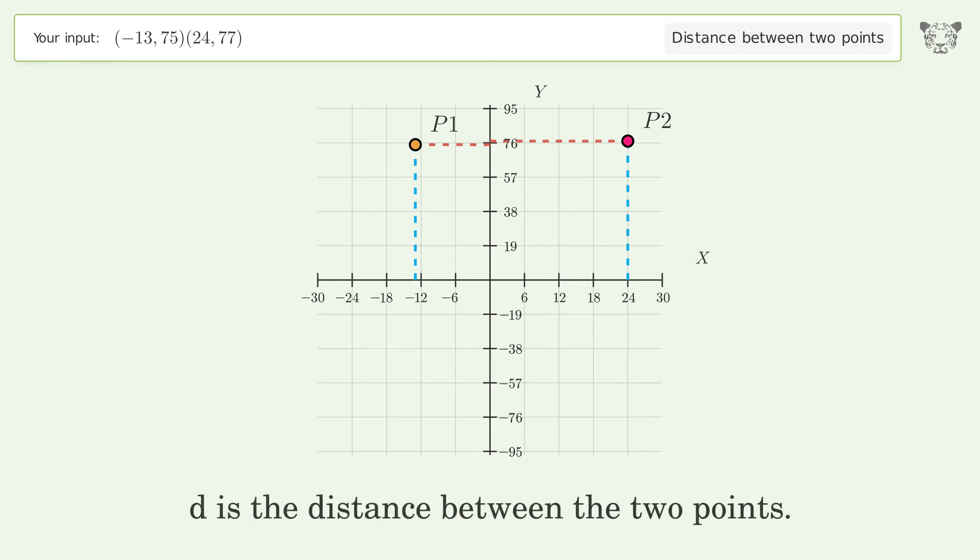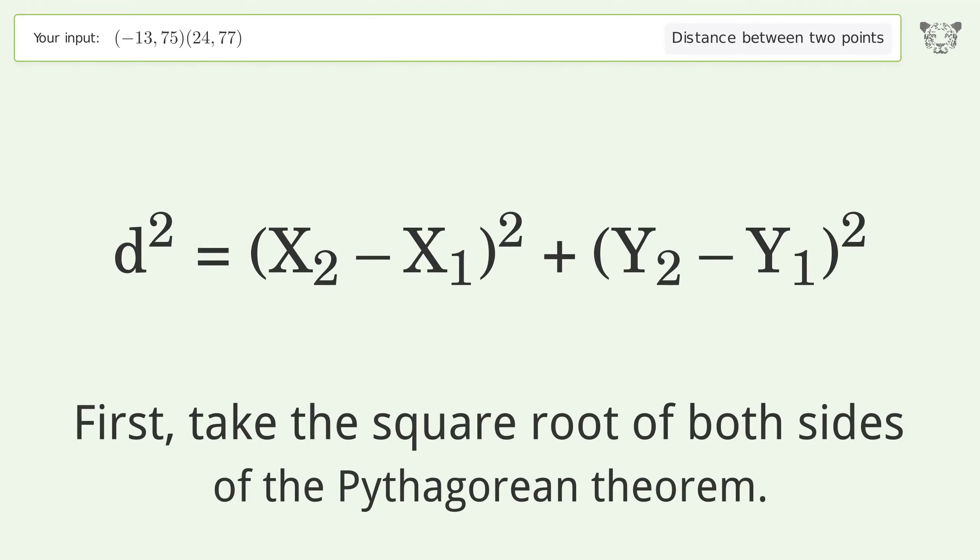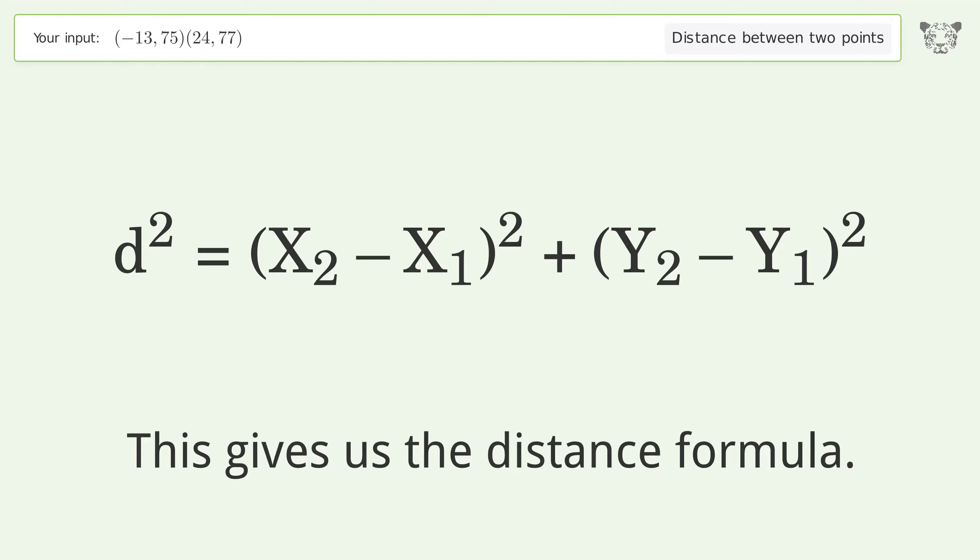d is the distance between the two points. First, take the square root of both sides of the Pythagorean theorem. This gives us the distance formula.